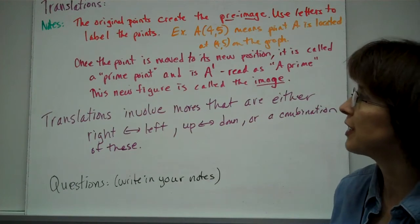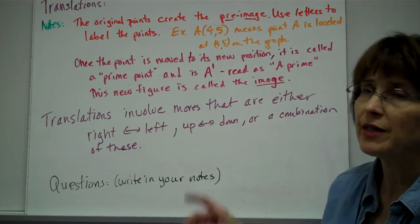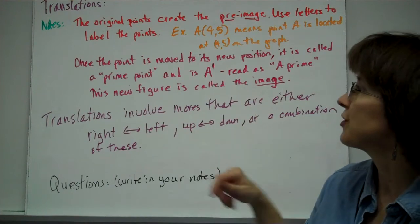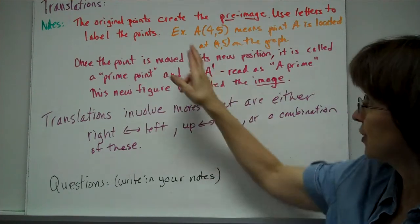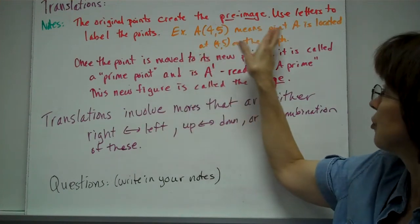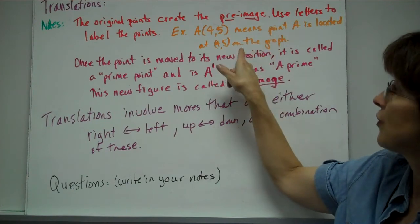The first thing you want to understand is that the original points create the pre-image. We use these letters to label the points, just regular letters. For example, A(4,5) means point A is located at (4,5) on the graph.